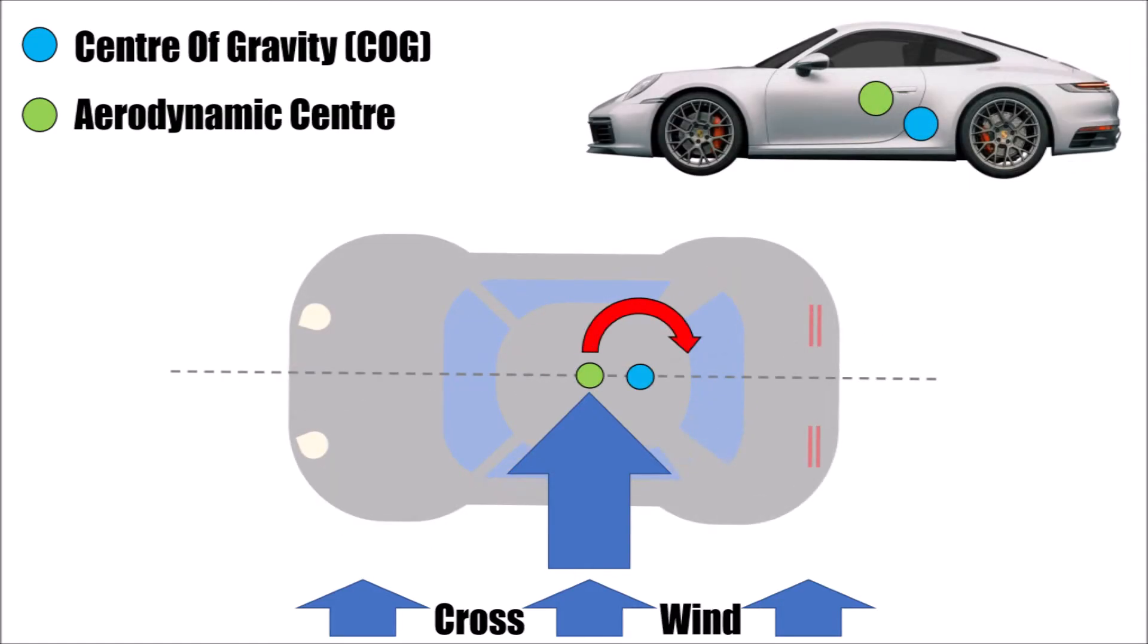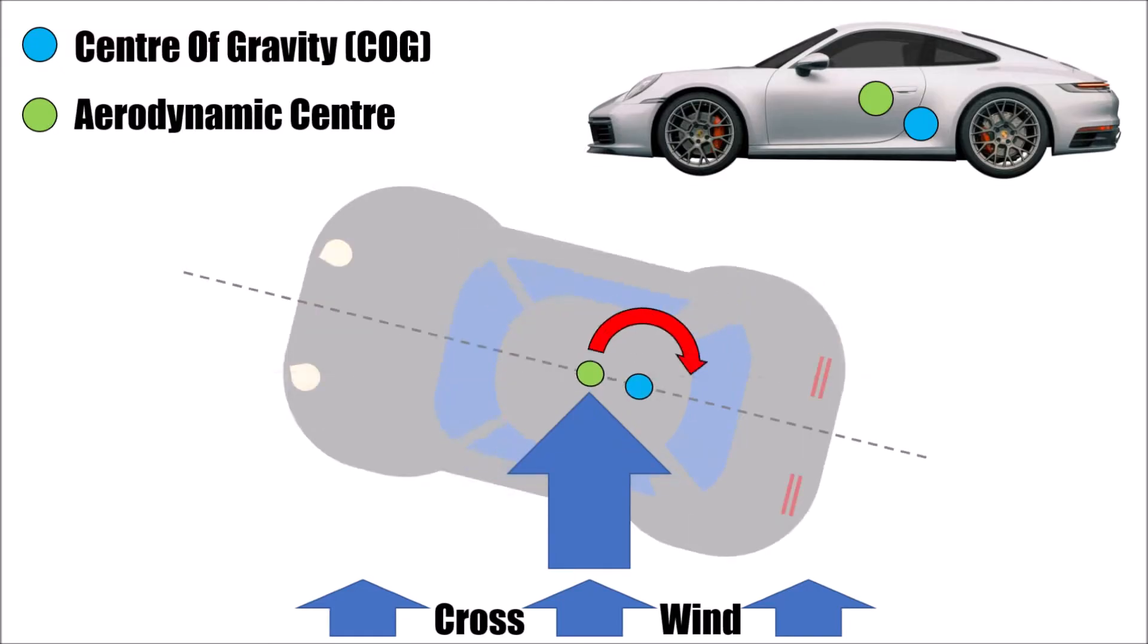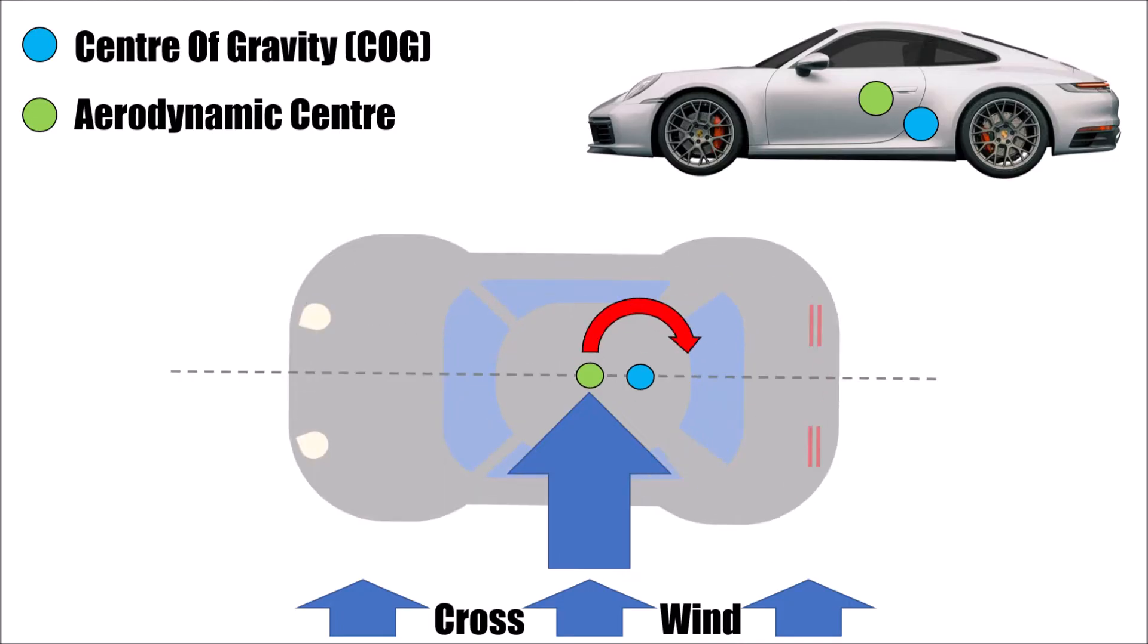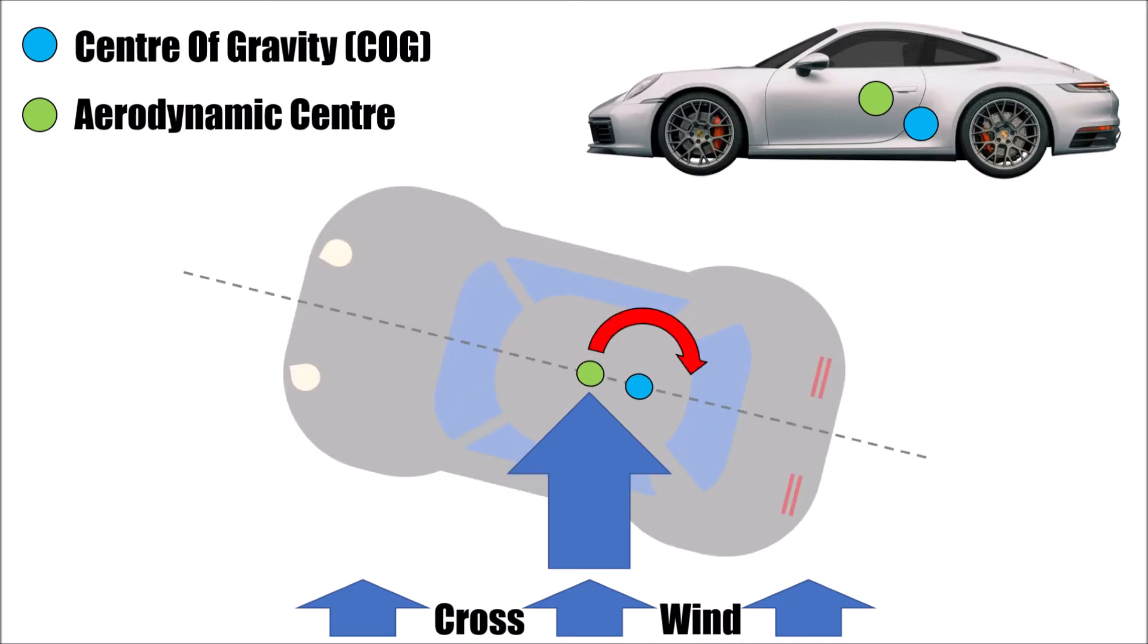Now let's have a look at the 911. Here the aerodynamic center sits in front of the COG. That means the crosswind pushes at the aerodynamic center and the car again turns around the COG, but this time the other way around, away from the crosswind. This concept increases crosswind sensitivity and literally blows the car away.